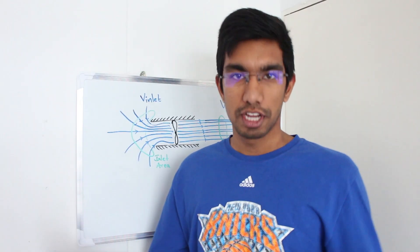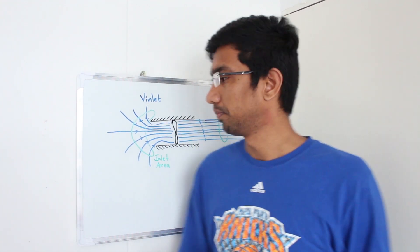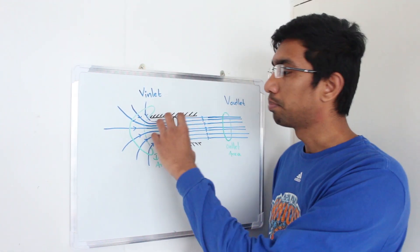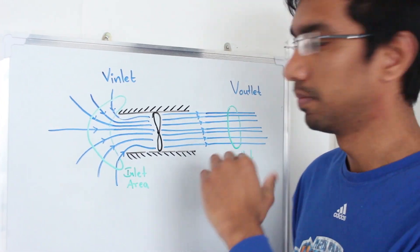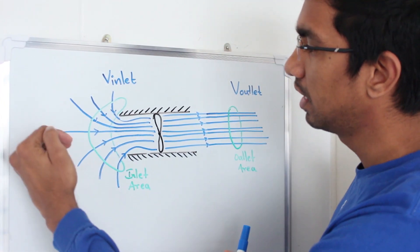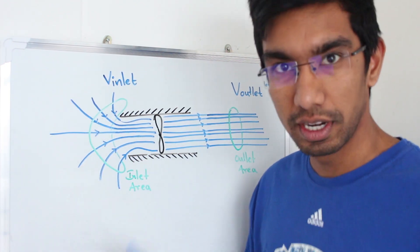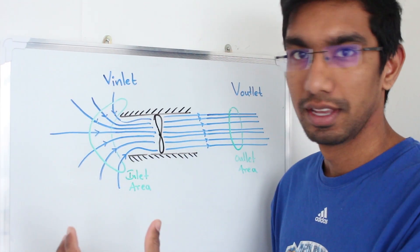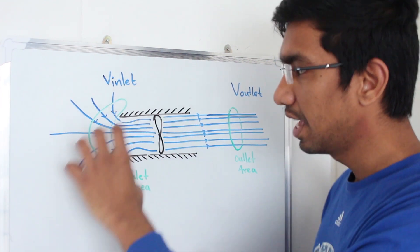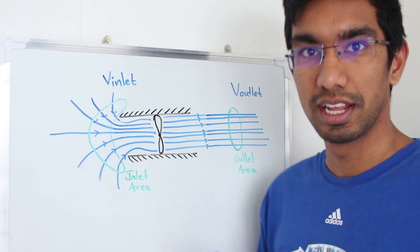So what did Kushal mean when he said same mass flow rate but different velocities? Imagine you have a pipe that is sucking air from one side and blowing it out through the other. Air comes in through all directions, meaning it has a higher area.